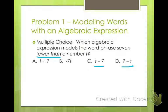All right, so the correct answer would be 7 fewer than a number T is T minus 7 because it's 7 fewer than T. You're taking 7 away from T. Hopefully you got that one.